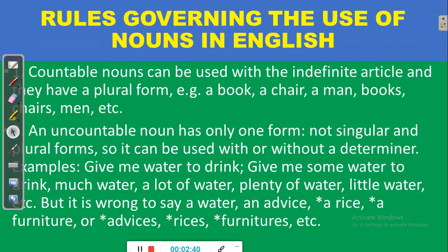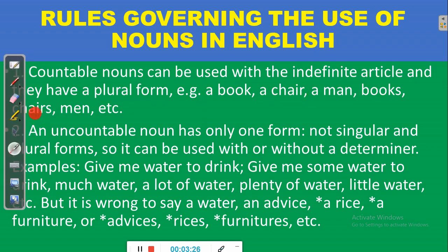Rule number one: countable nouns can be used with the indefinite article and they have a plural form. You have the singular and the plural forms of countable nouns. For example, you can say 'a book' or 'books,' 'two books.' A chair, a man — then you can talk of books. I have two books; if you have only one, you say 'I have a book.' We rented a chair; if you are talking of two or more, we rented some chairs or we rented ten chairs.